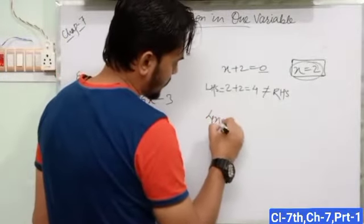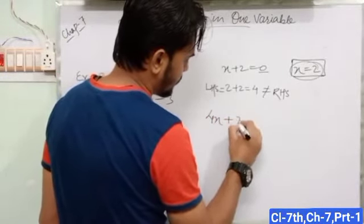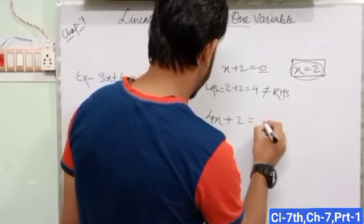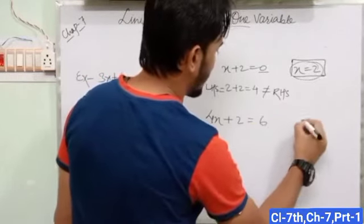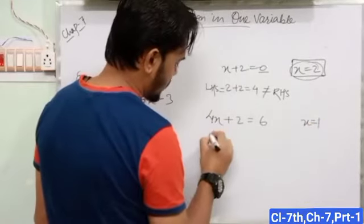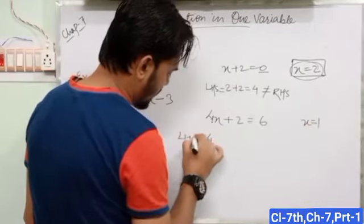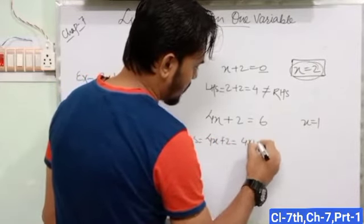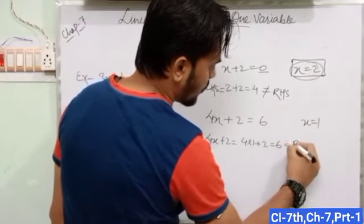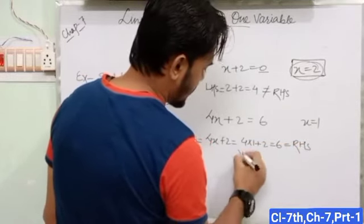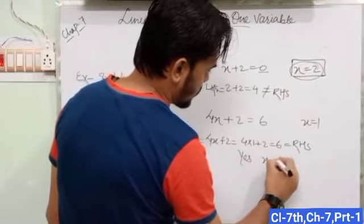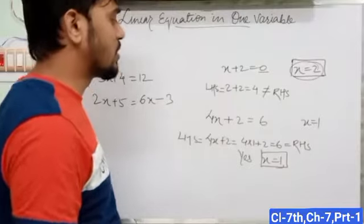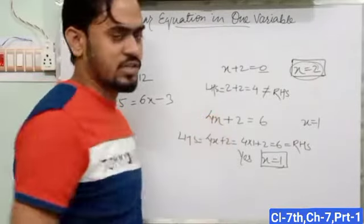Take another example: 4x + 2 = 6 and the value of x = 1. Check here: LHS = 4x + 2 = 4 × 1 + 2 = 6, which is equal to 6, which equals RHS. That means x = 1 satisfies 4x + 2 = 6.